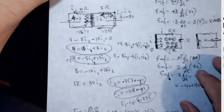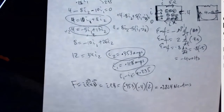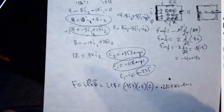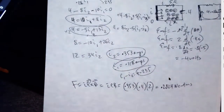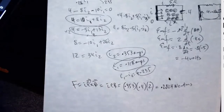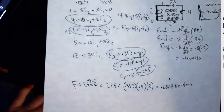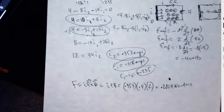You see what's happening to the direction of the current — the current in the rod is such that the force on the rod fights against the motion of the rod. Which is just another form of Lenz's law. It goes back to Lenz's law.